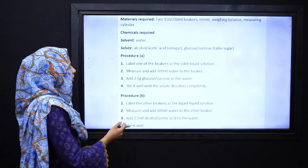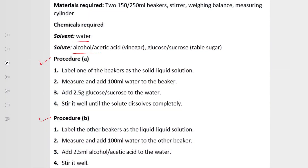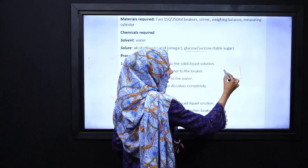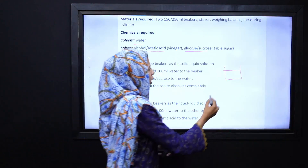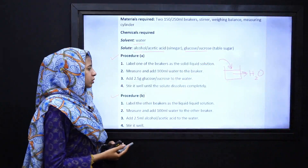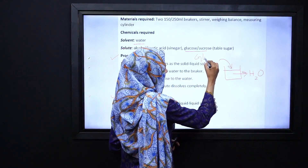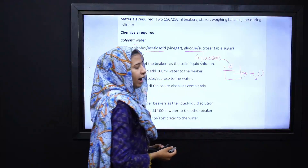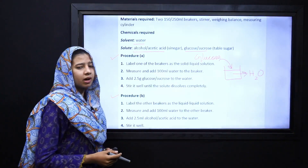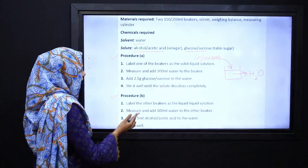The materials you need are water and either glucose, sucrose, acetic acid, or alcohol. For Procedure 1, take a beaker and add 100 ml of water. Then add the solute — if you have sucrose or glucose, add glucose. Stir until the glucose completely dissolves, and the solution is prepared.